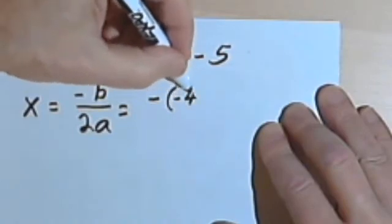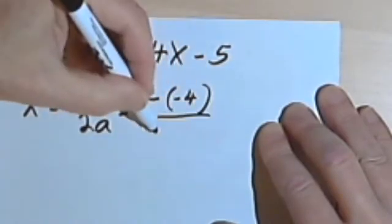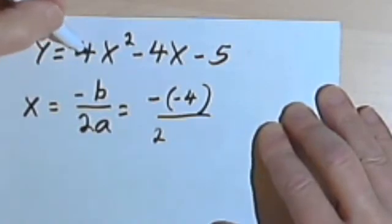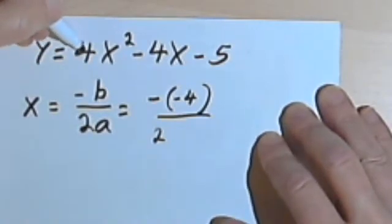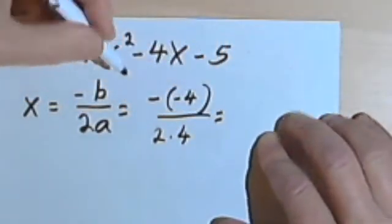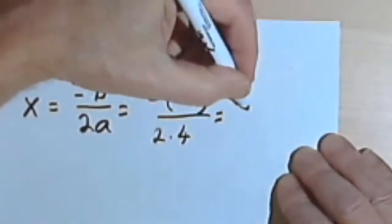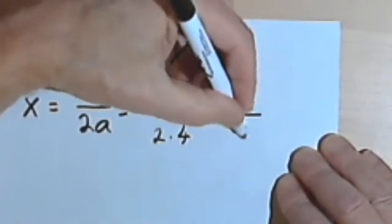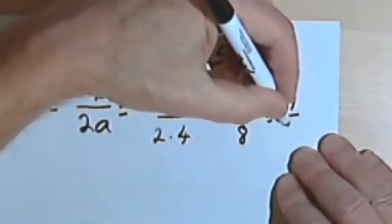Negative negative 4 over 2 times a. Well, a is going to be, I've got 4x squared, so a is going to be 4. And then negative times negative is positive, so that's going to be positive 4 over 8, and that will reduce to one-half.